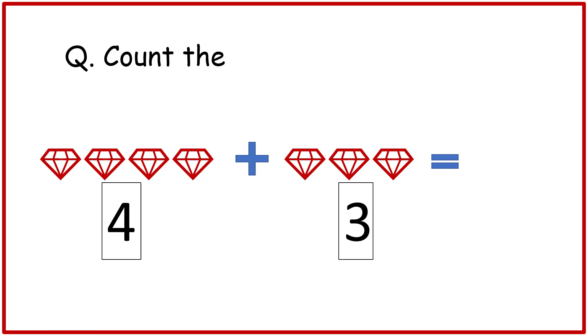Question. Count the objects. Write the numbers. 4 plus 3 is equal to 7.